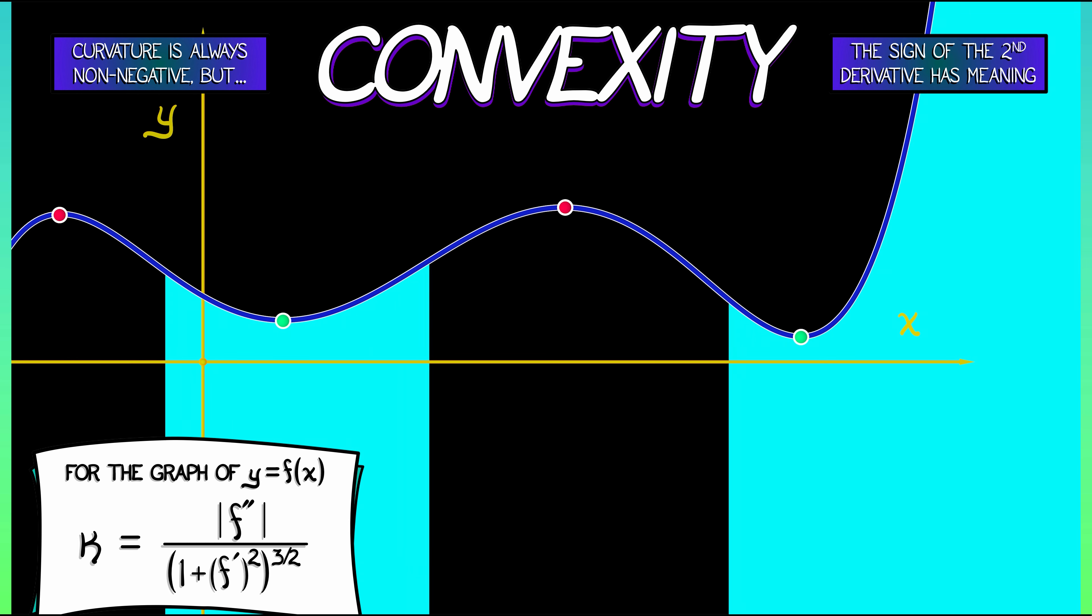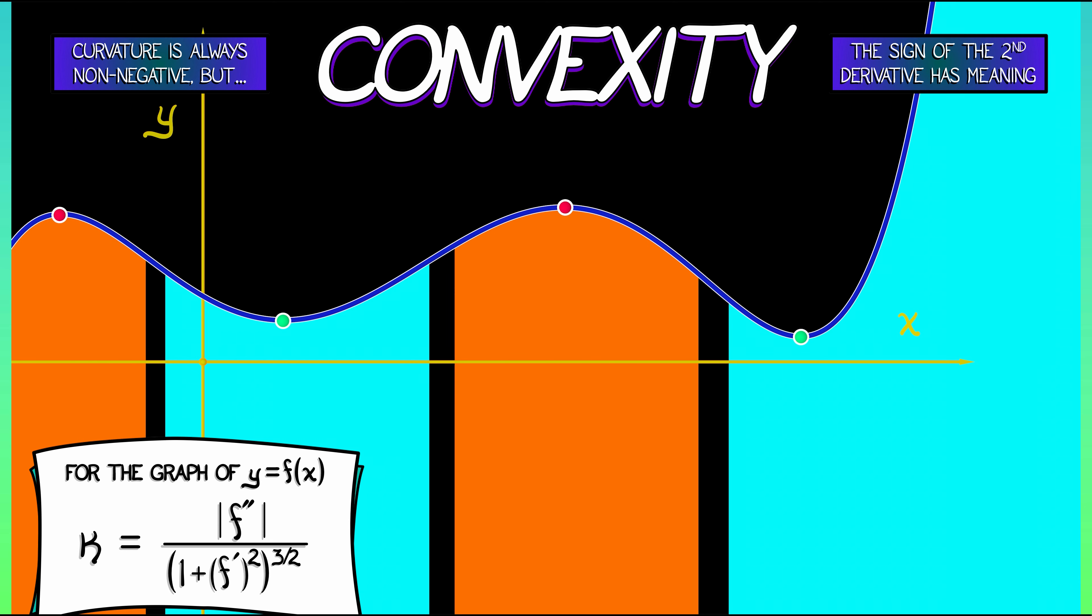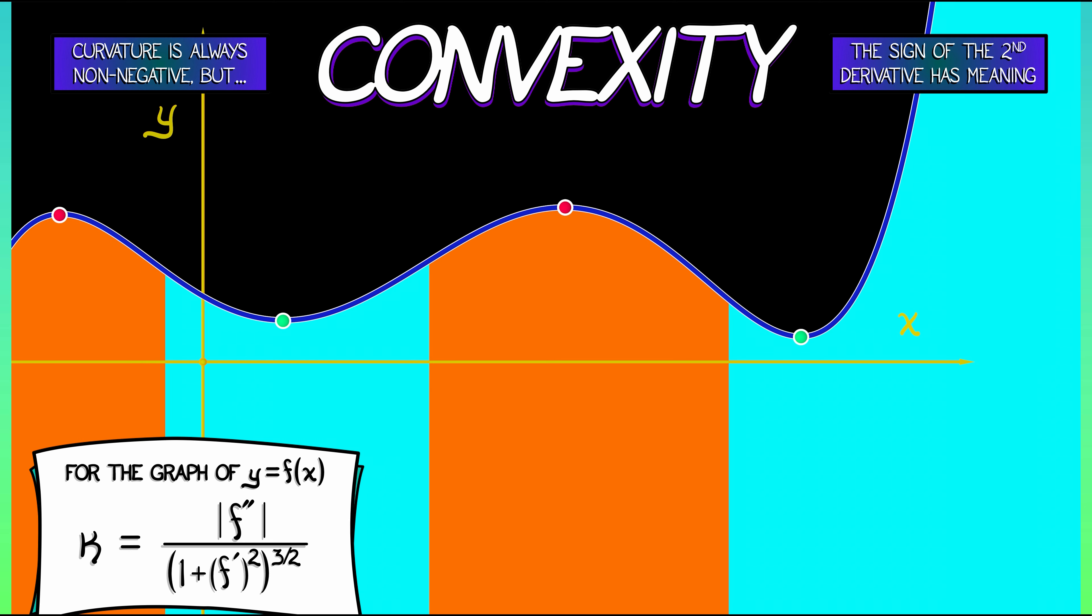In regions where the second derivative is negative, we say that it's concave down. And at those particular points where the second derivative vanishes, those are places where the curvature is zero.